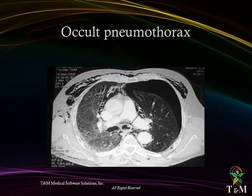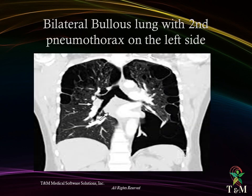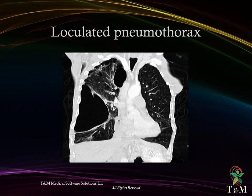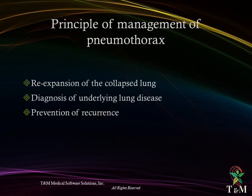CT scan findings illustrated include occult pneumothorax, primary pneumothorax with upper lobe localized bulla, bilateral bullous lung disease with secondary pneumothorax on the left side, bilateral bullous lung disease without pneumothorax, tension pneumothorax, and the depressed diaphragm sign.